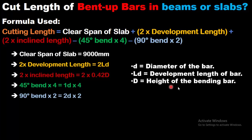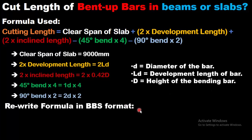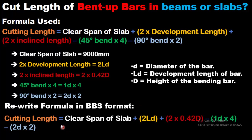It is important to clarify: small d is the diameter of the bar, LD is the development length of the bar, and capital D is the height of the bending bar. Rewriting this formula in BBS format: clear span plus 2 times LD plus 2 times 0.42 times capital D (the depth of the crank bar), minus bend deduction for 45 degrees, minus bend deduction for 90 degrees.